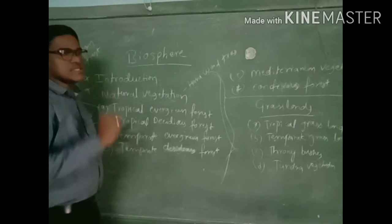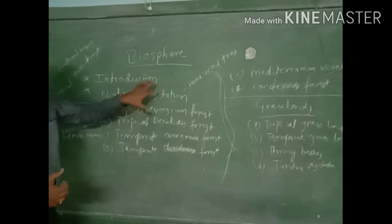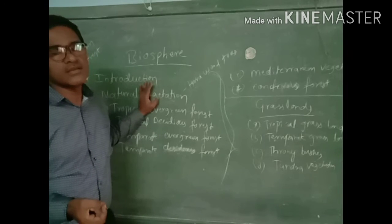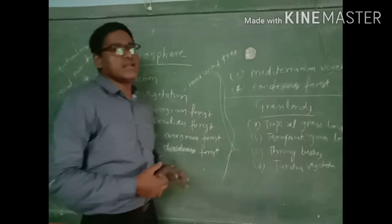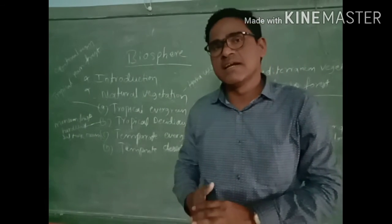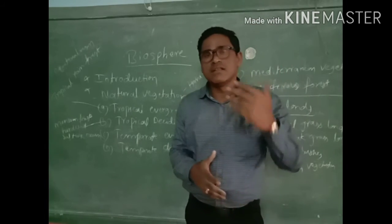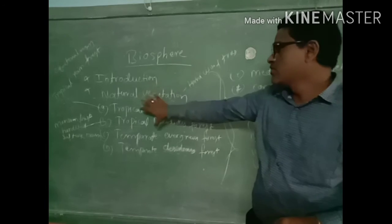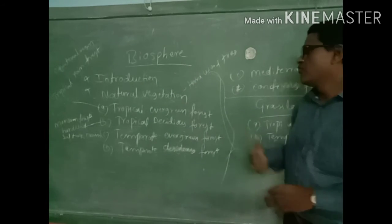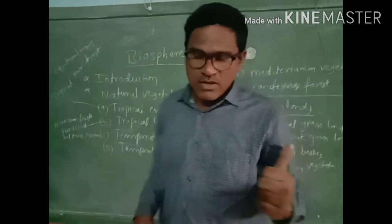Natural vegetation is completely dependent on sunshine and rainfall. On Earth, some regions get heavy rainfall and some regions get standard rainfall. Based on sunlight, rainfall, and temperature, natural vegetation is divided into five types.